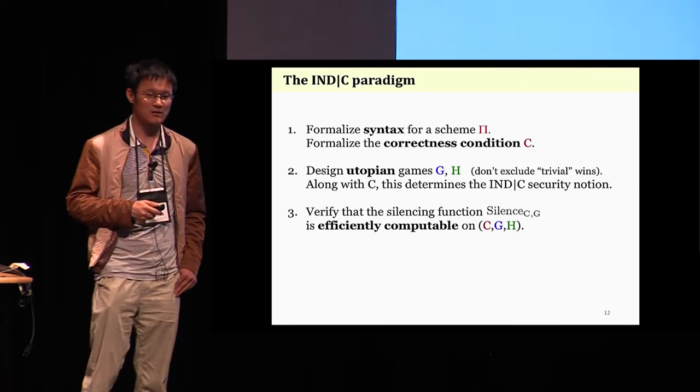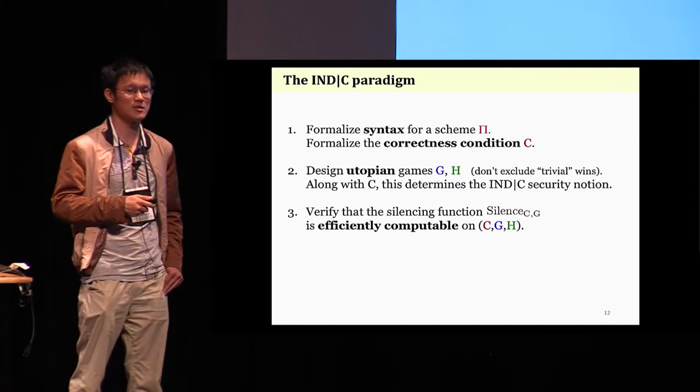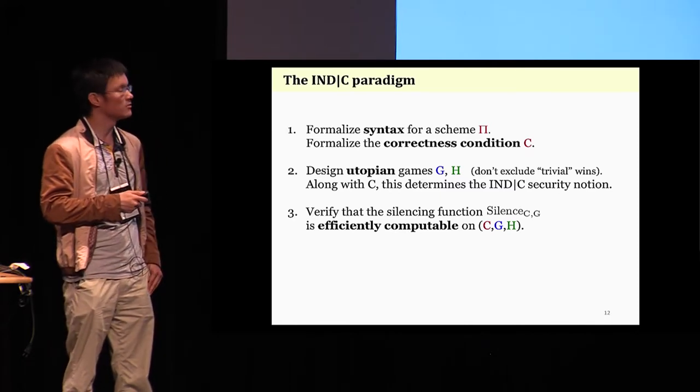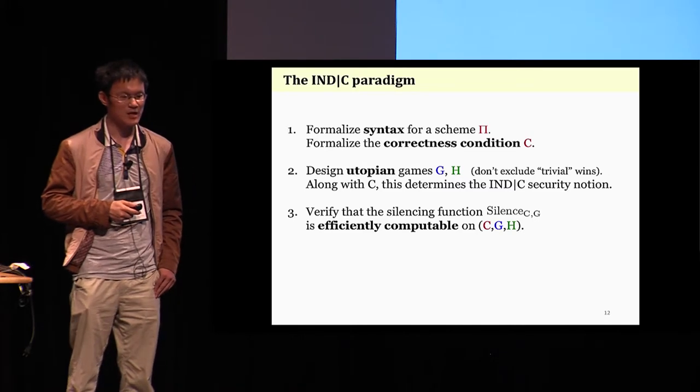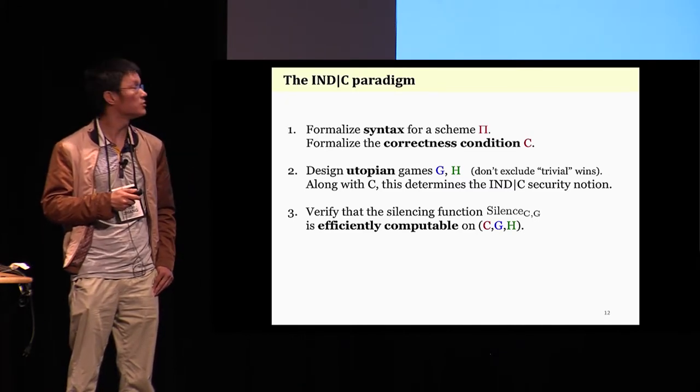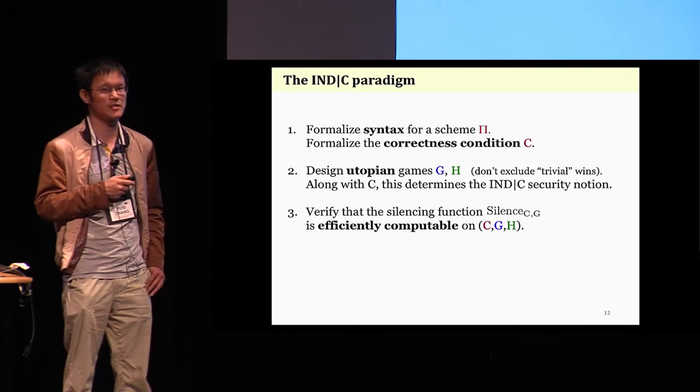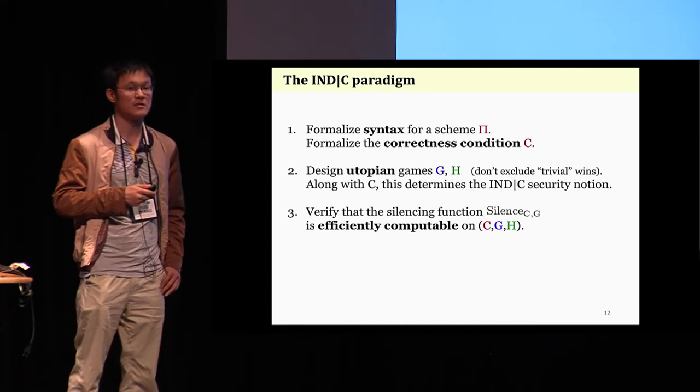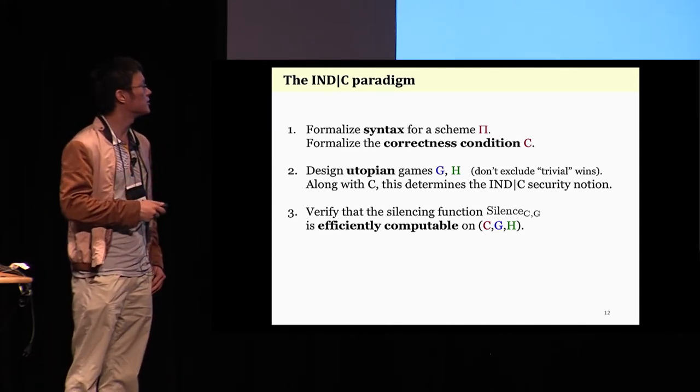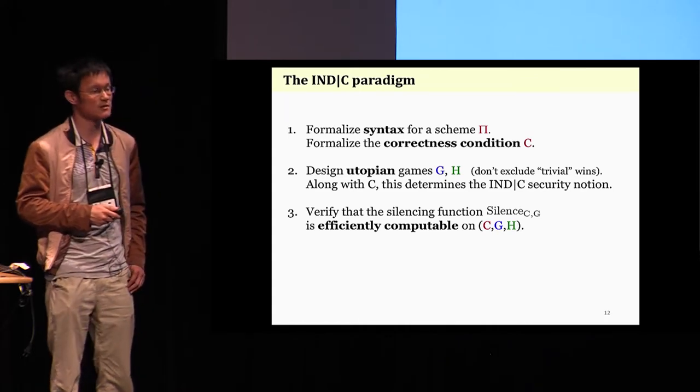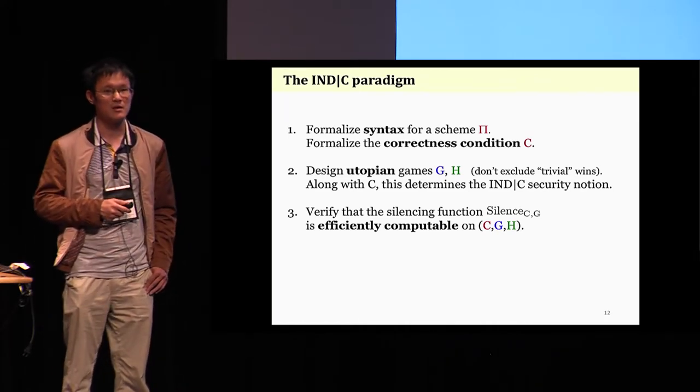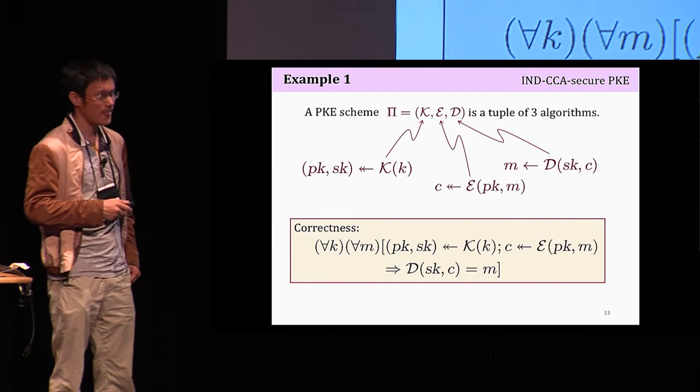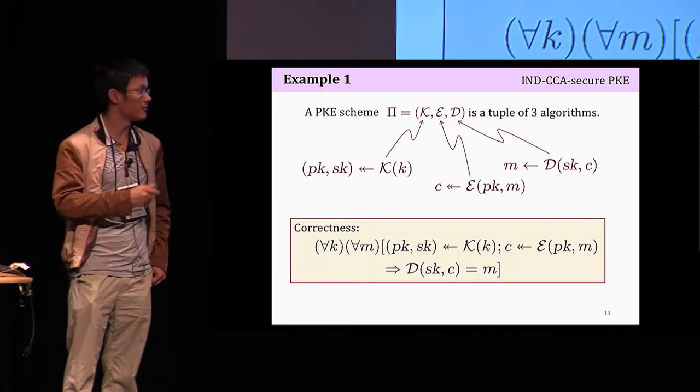Let's summarize how we use INDIC to create definitions. We first formalize syntax of schemes pi, then the correctness condition, this will give us a correctness class. The same step as the conventional way. We next design utopian games G and H. And in doing so, we don't need to attend to logic for excluding trivial winning queries, for example. Along with C, this determines the INDIC security notion we want. Finally, we need to verify the silencing function is efficiently computable on the relevant sets of transcripts.